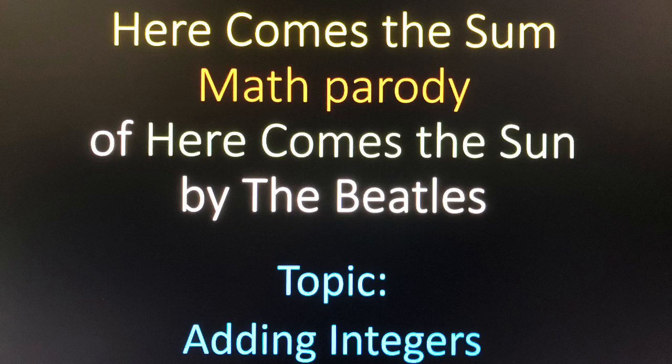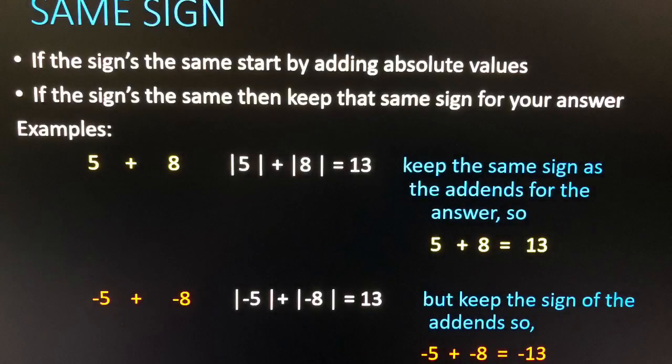How to find the sum with integers, it's alright. If the sign's the same, then start by adding absolute values. If the sign's the same, then keep that same sign for your answer. Now you've found a sum, and now you've found the sum with integers, it's alright.